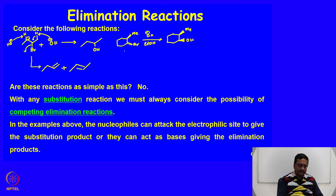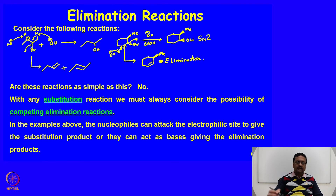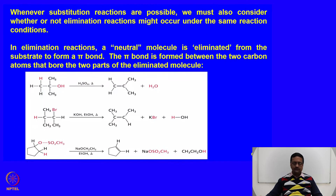A double bond may form and we may end up getting a product like that. Similarly, in this case, if the OH- attacks this proton and this bond, the double bond forms and bromine is eliminated, giving you a product. So it is possible to get some SN2 product and some elimination product in this type of reaction. We need to see what factors influence the formation of elimination products, and that we will go through in the next few slides. Whenever substitution reactions are possible, we must consider whether or not elimination reactions may occur under the same conditions.